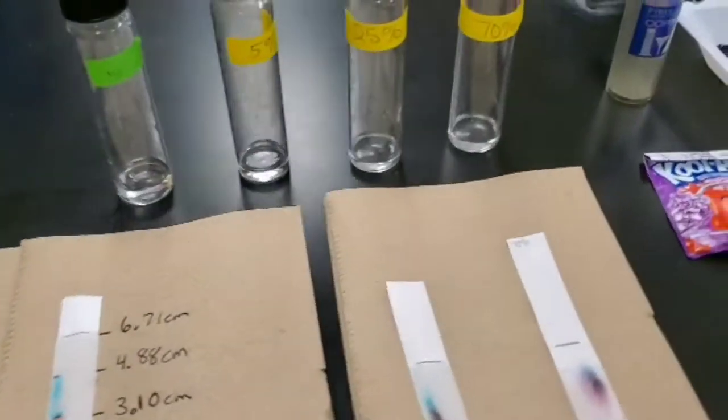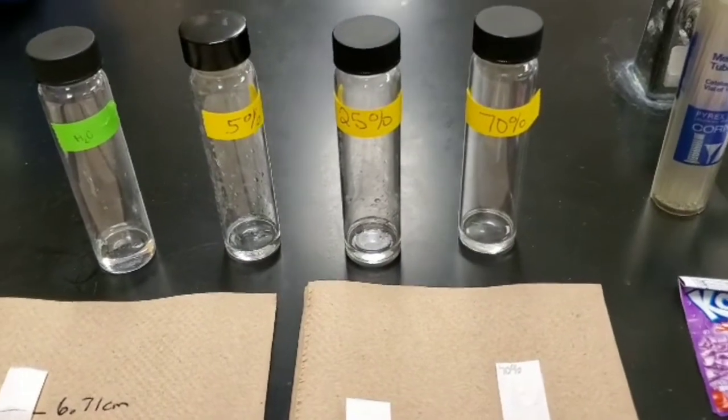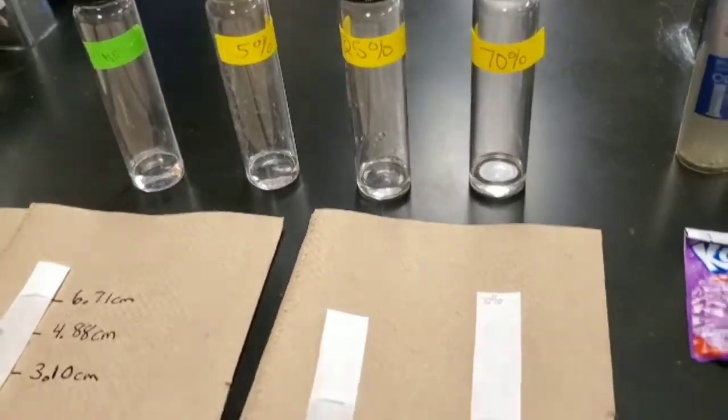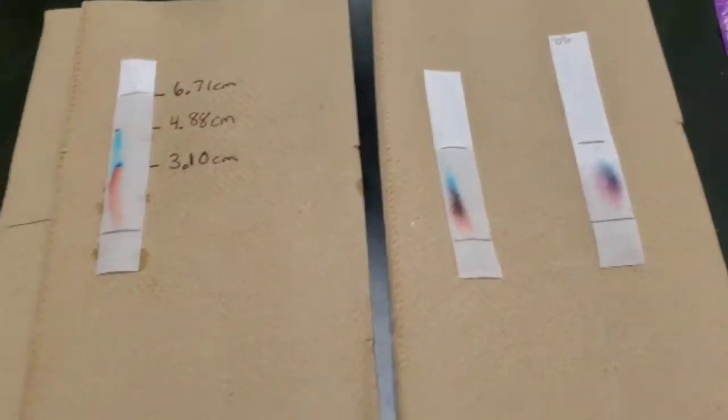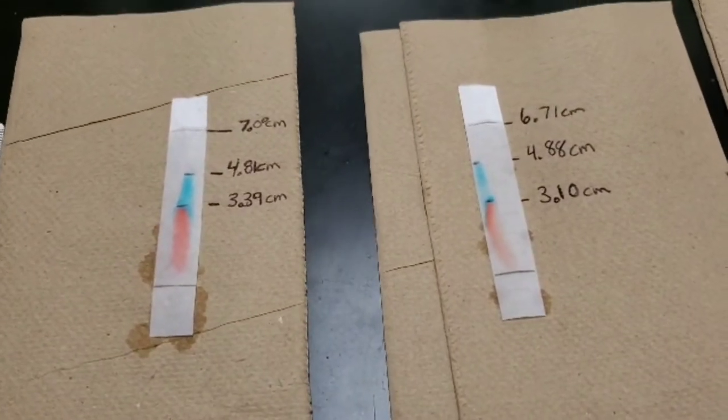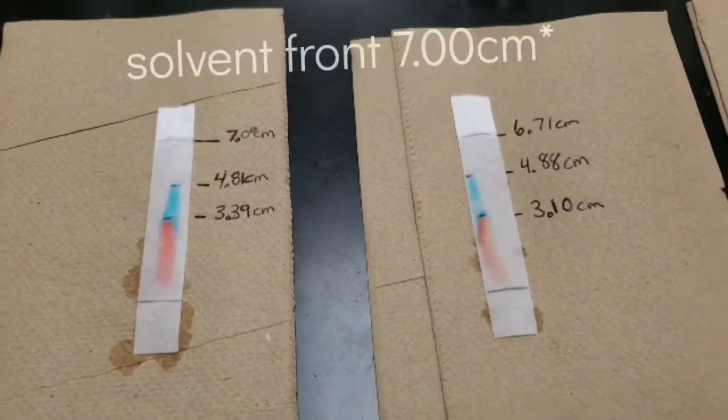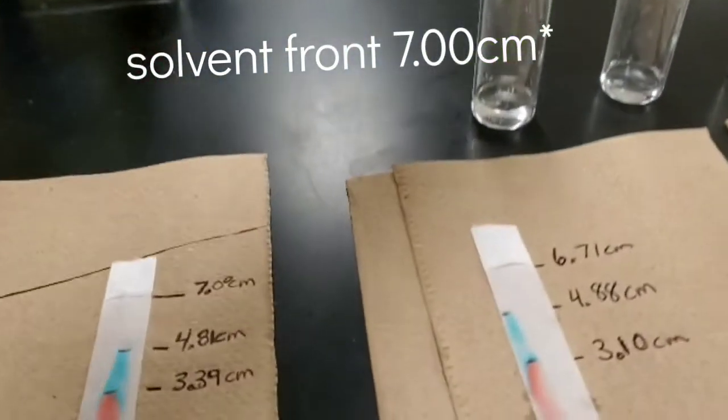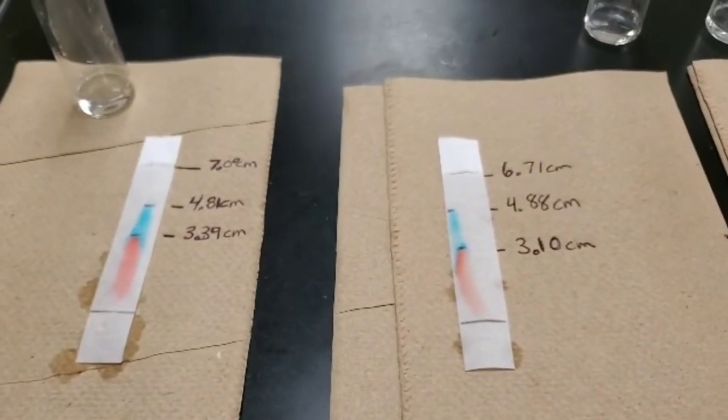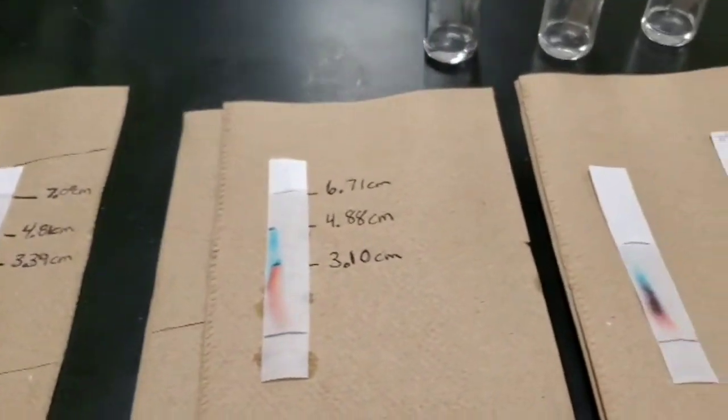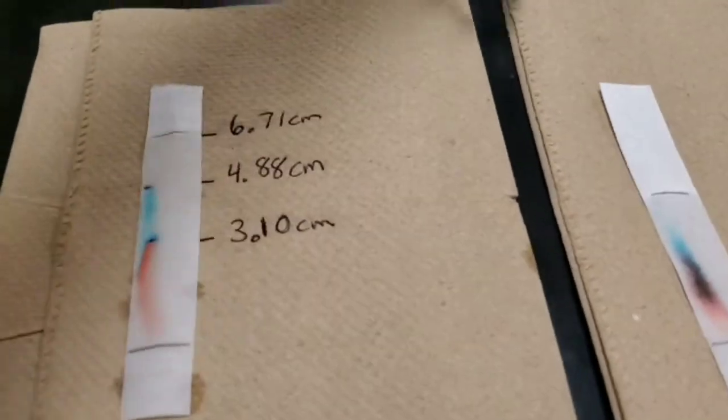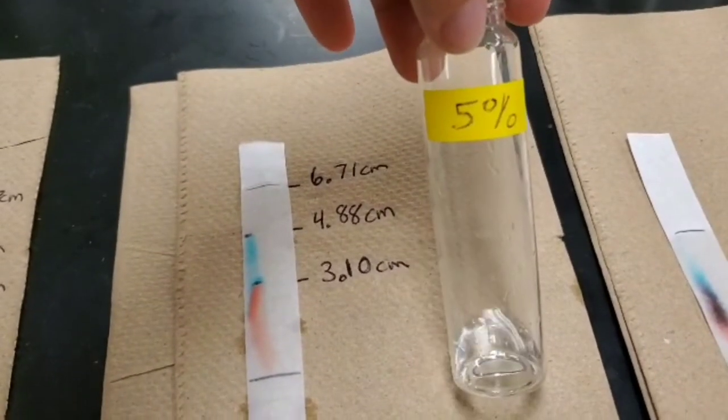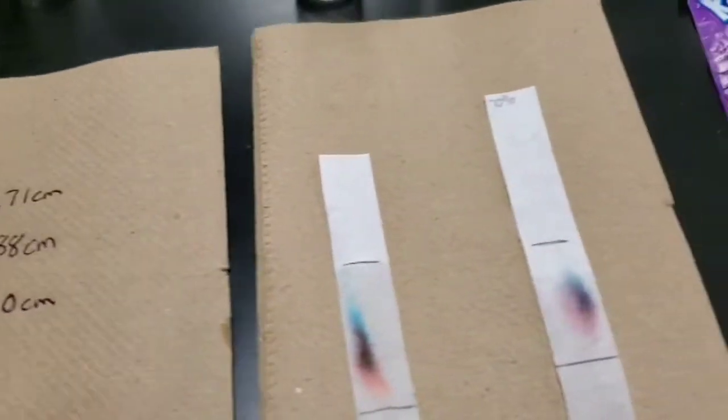Here are the chromatograms completed. Notice that a line has been drawn at the top to show the solvent front. For water, that line is at 7.09 centimeters. For the 5%, it's 6.71 centimeters as its solvent front. Then the blue and red dye have been separated.